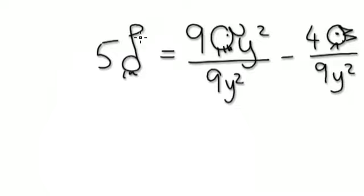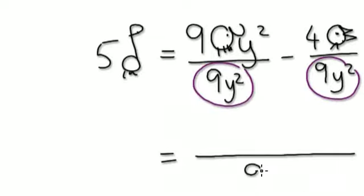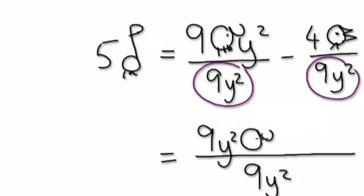Let's stick the giraffes in. Now we can merge the two fractions because the two denominators are the same. Nine y squared elephants — same thing as nine elephants y squared — it's the same thing.